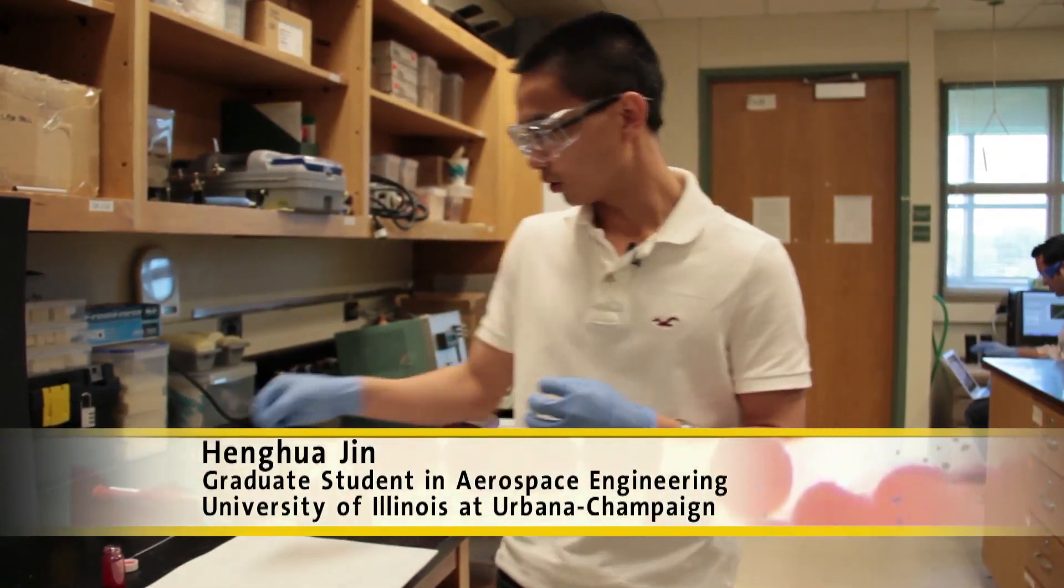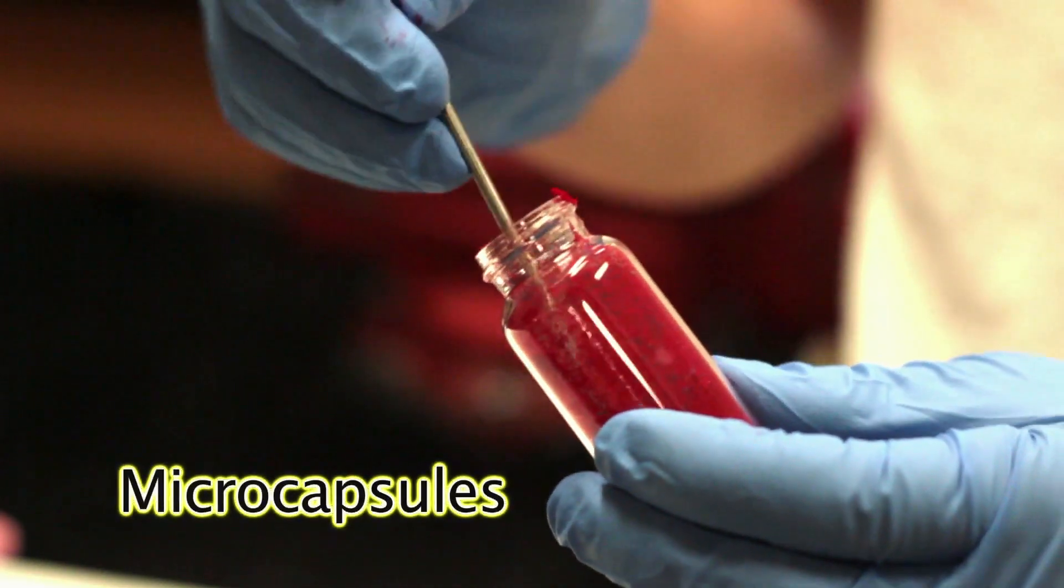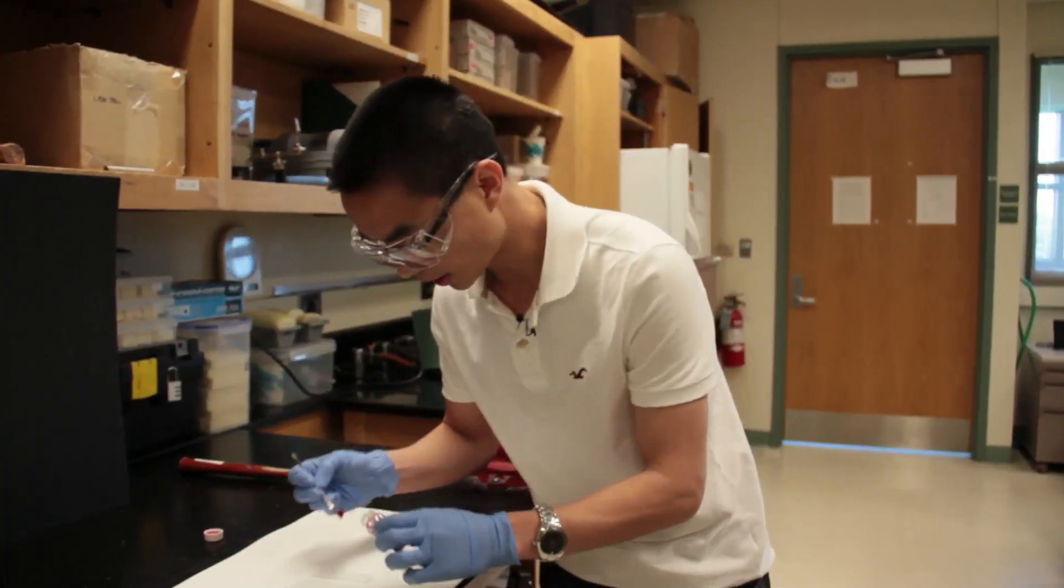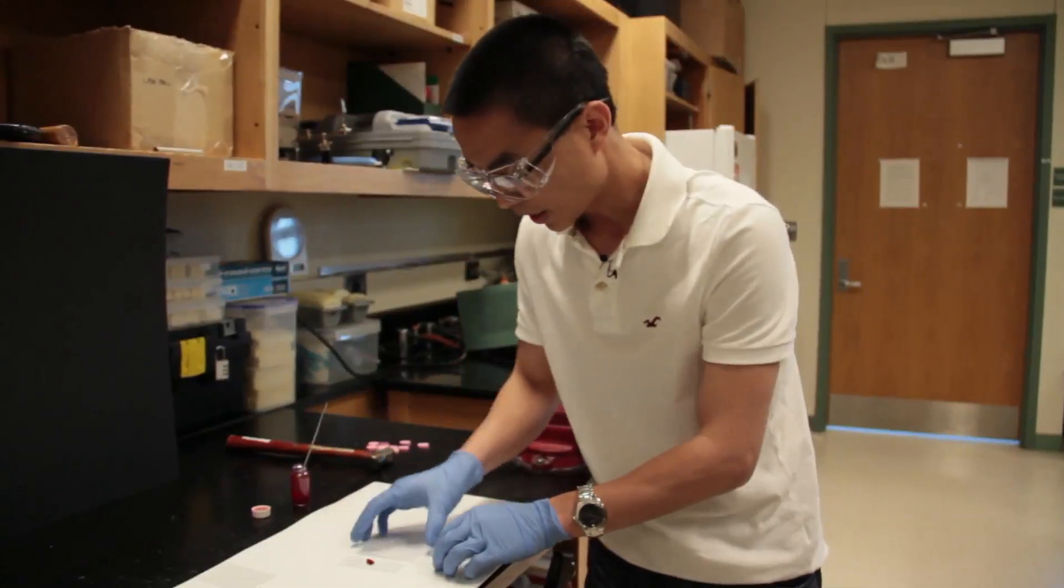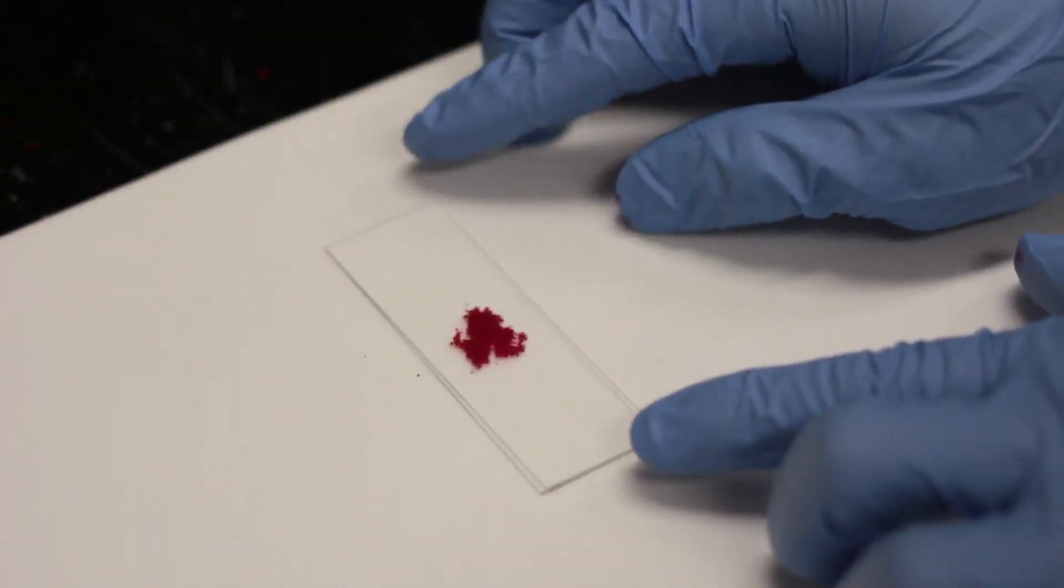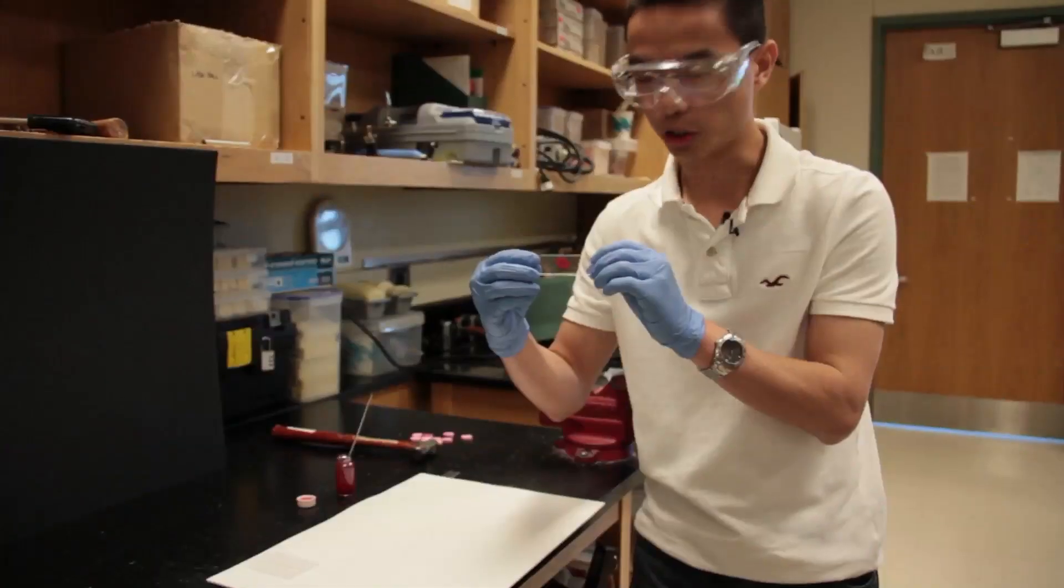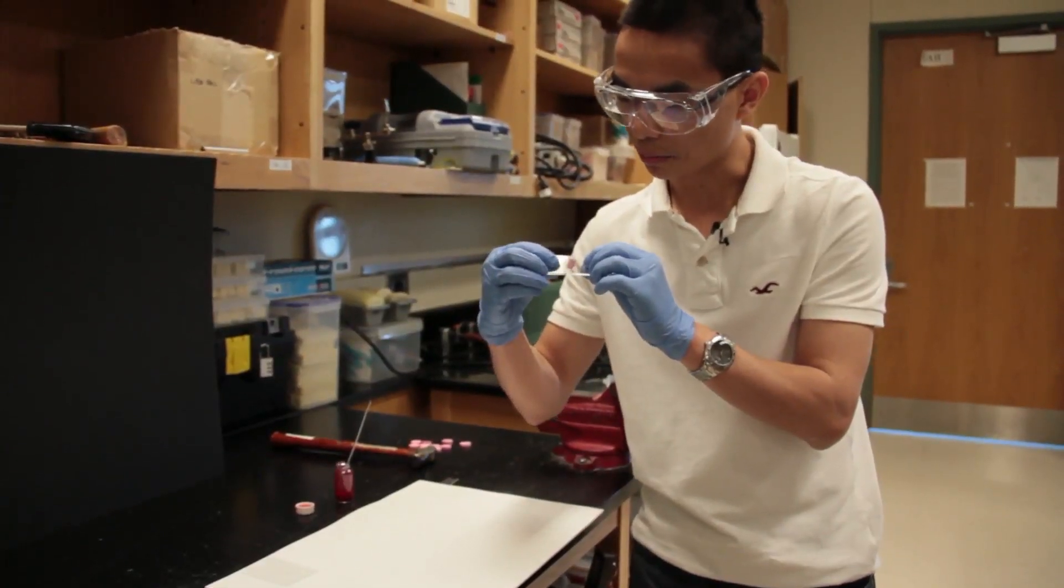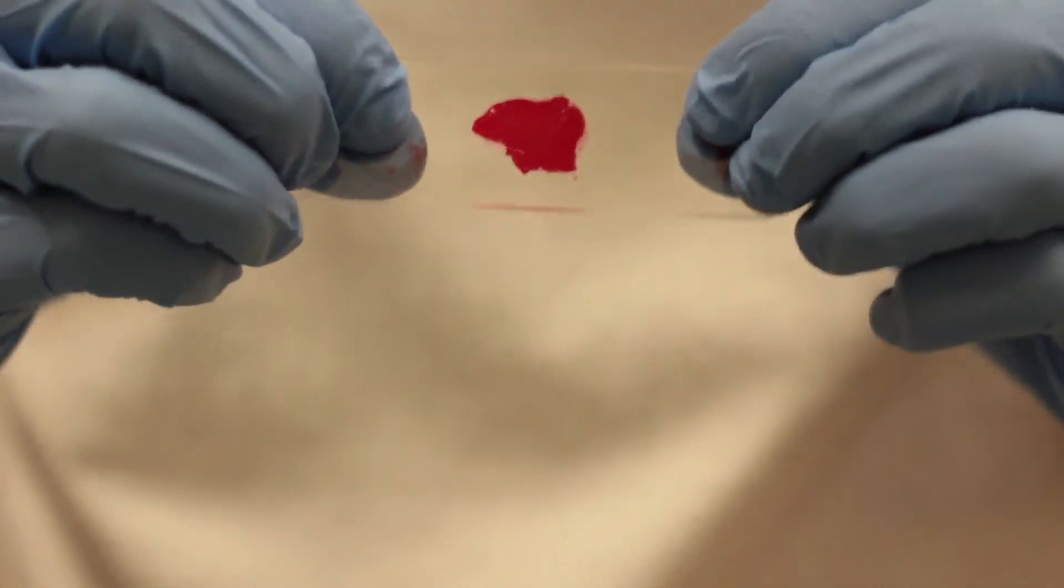Today I'm going to show you microcapsules that are being used in self-healing materials. So first I will show you some microcapsules. You can imagine like a little tiny egg that has a liquid core material protected by solid shell materials. So you can see they are microcapsules. When you apply some force and break it, you can see liquid core material release out like blood.